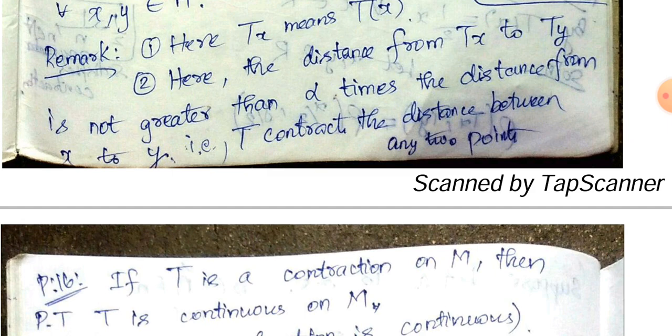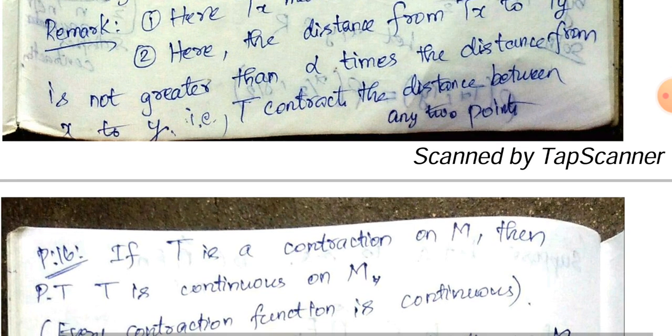Remark: The distance from Tx to Ty is not greater than α times the distance from x to y — less than or equal. This is the distance from Tx to Ty, which is α times the distance between x and y. That is the distance between x and y — T contracts the distance between any two points.